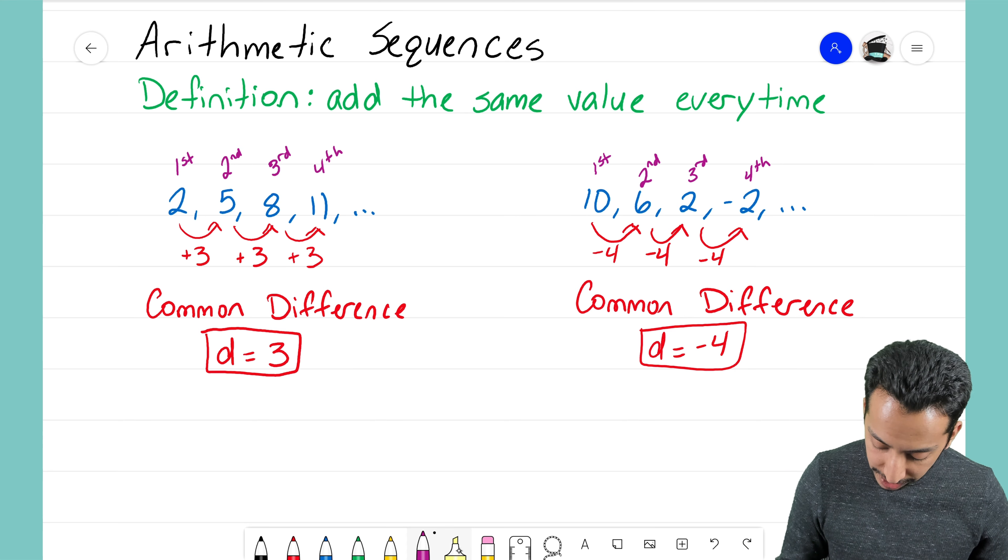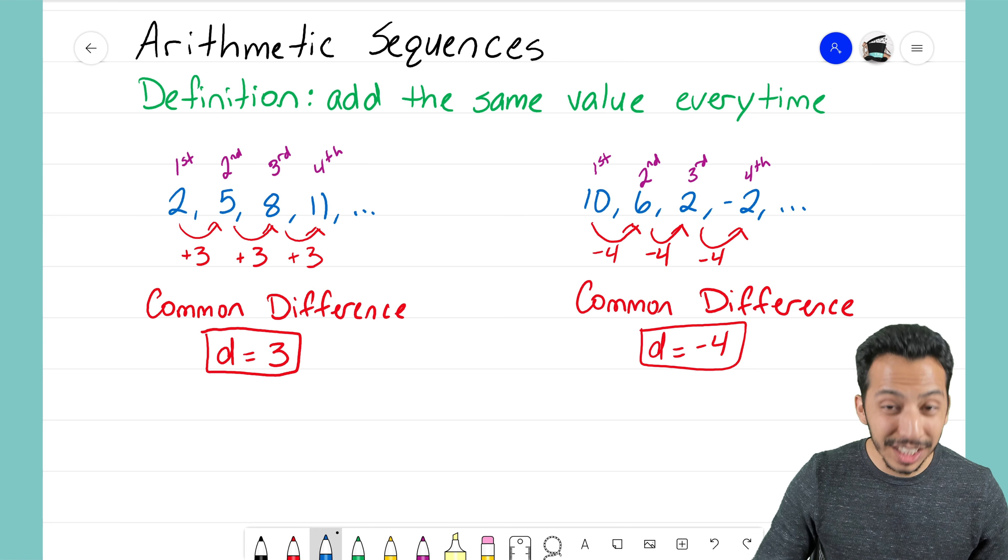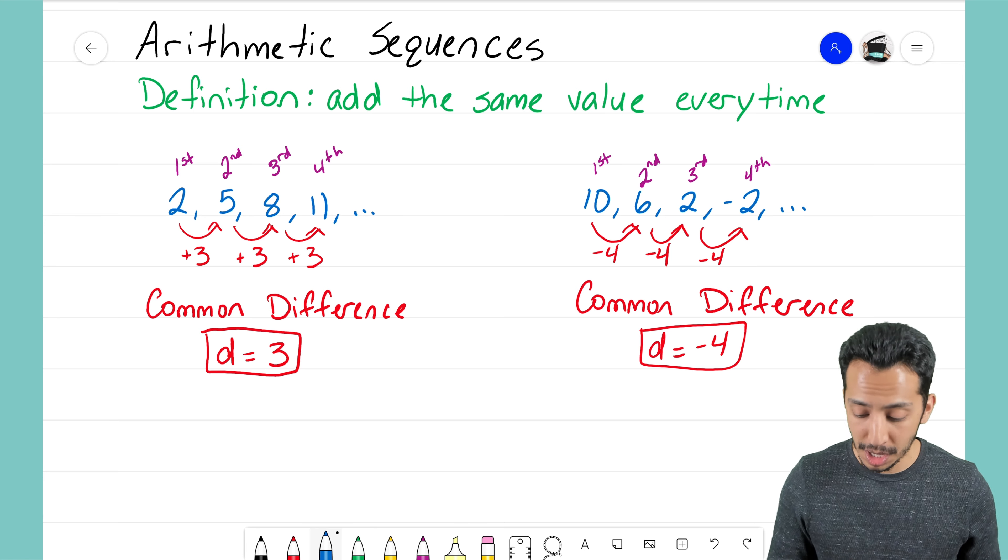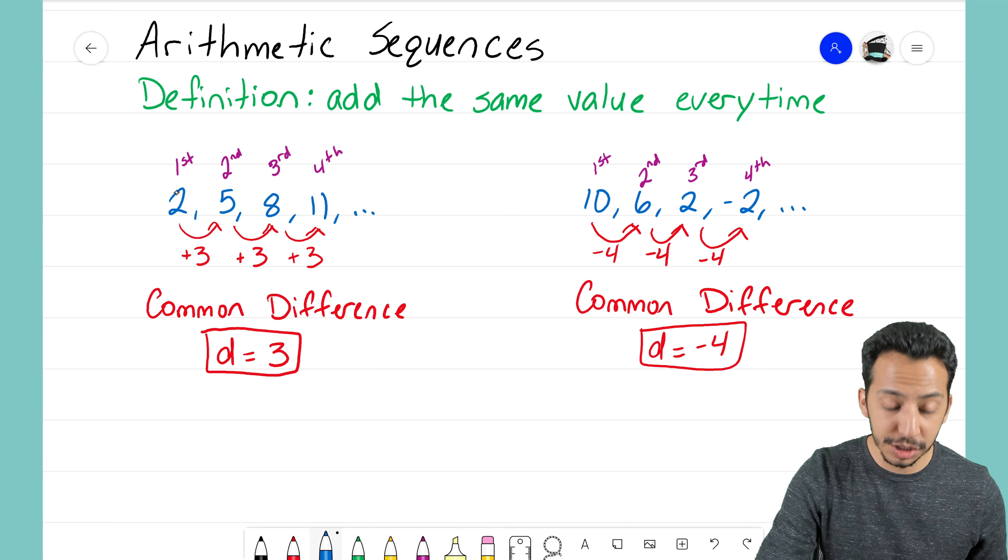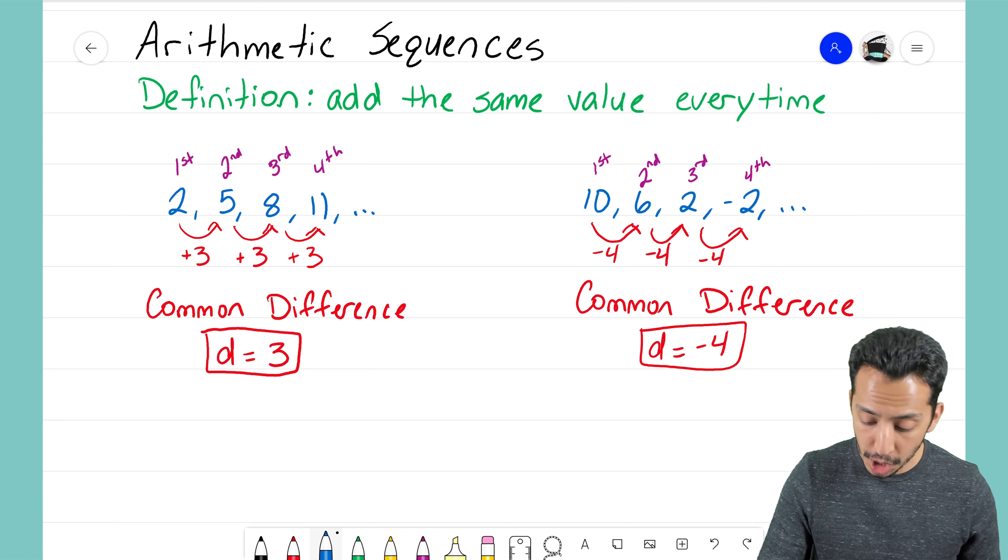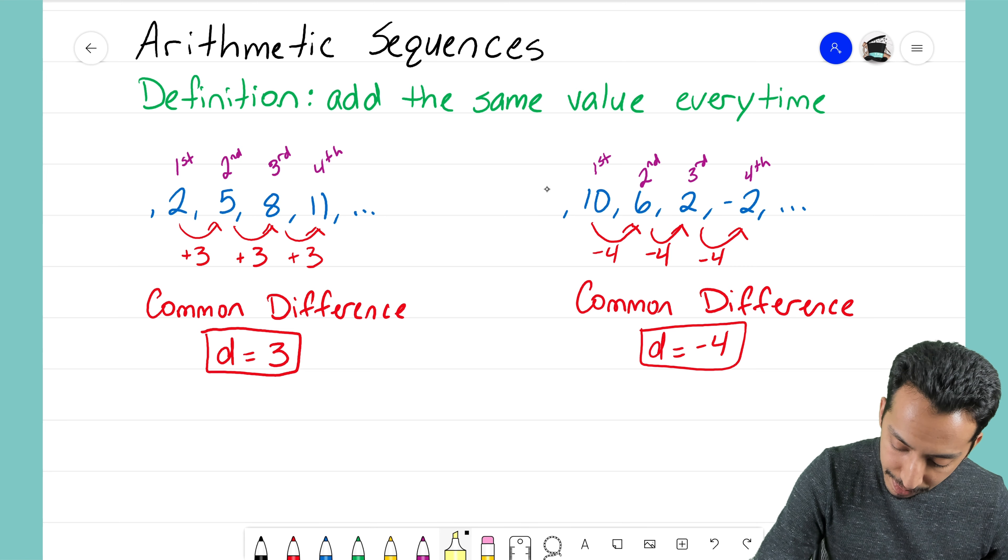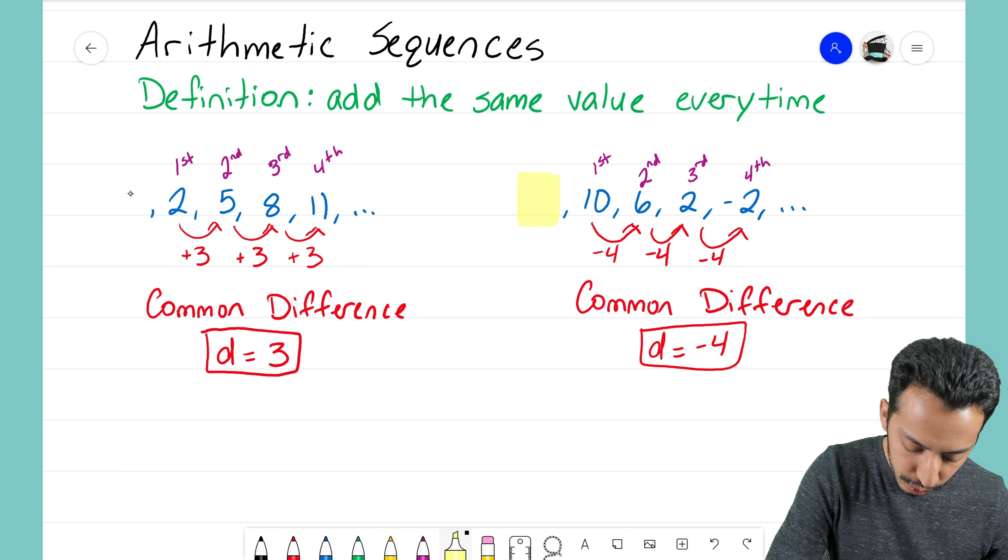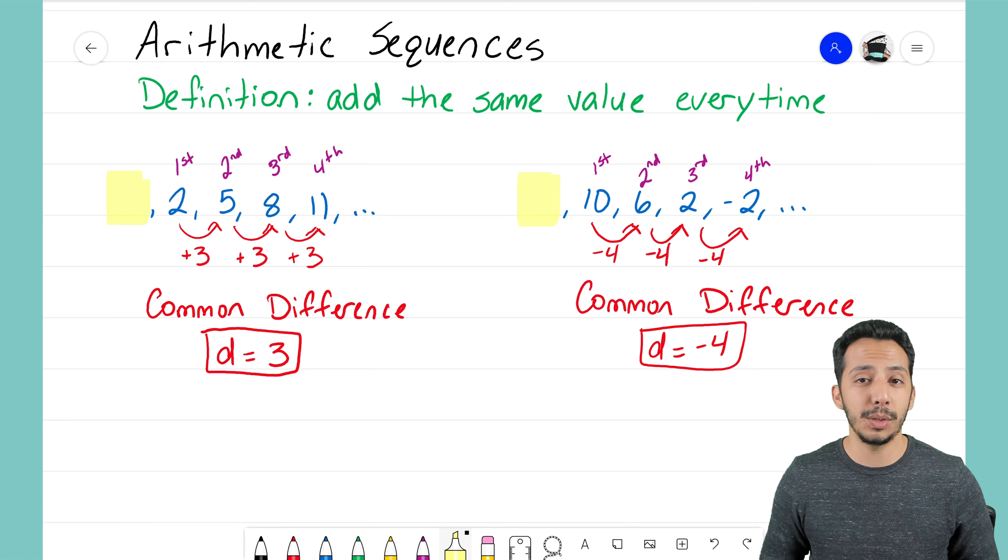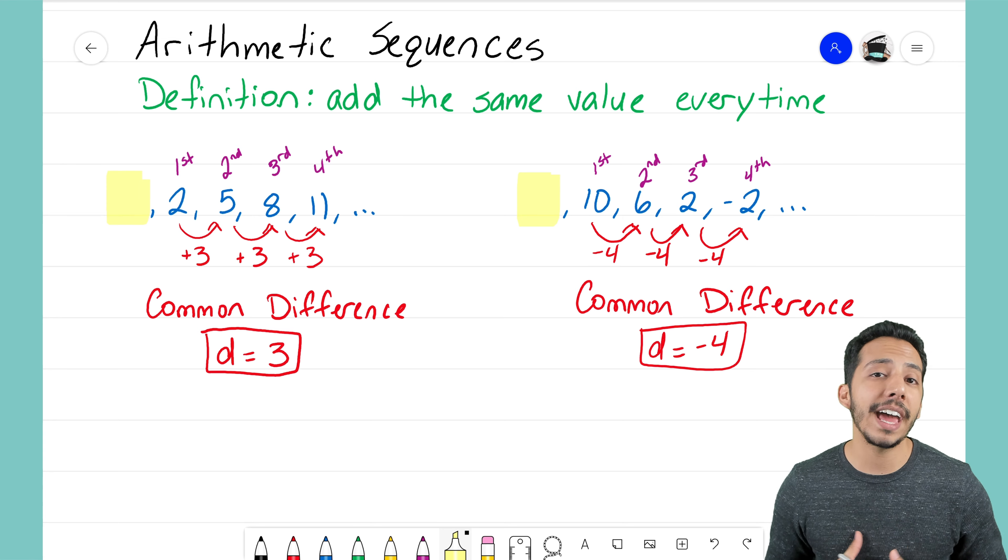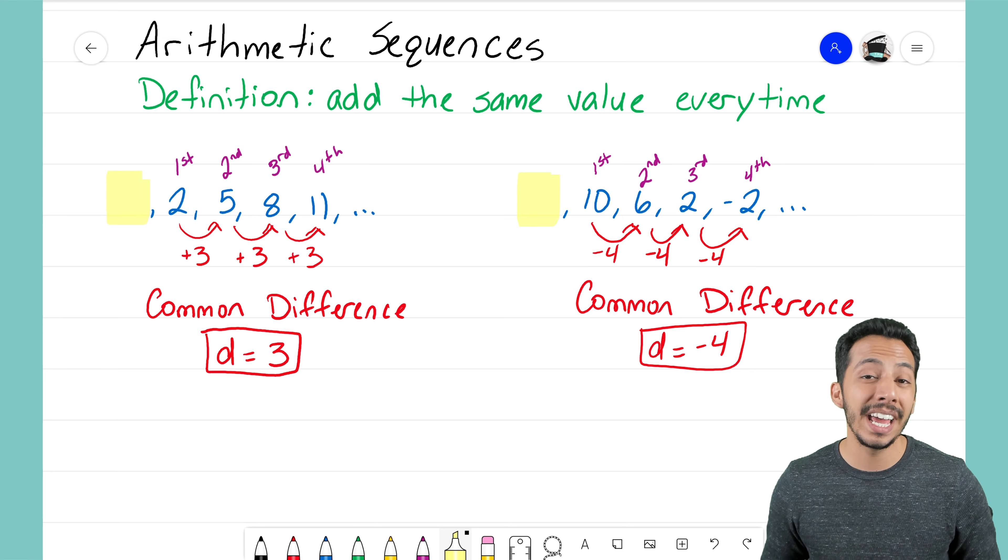So really what we're trying to focus on here is that we don't see the zero term because our sequences here are starting with that first term. So what we really are caring about here is we're caring about this unknown term that goes right in front of both sequences, and we refer to that as our zero term.